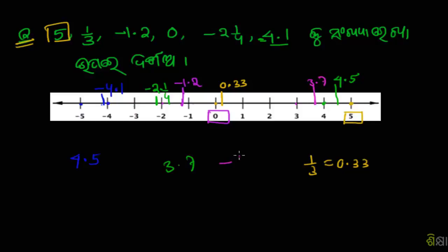We have minus 0.5. First, we have minus 0.5. How does it have? Between 0 or minus 1, we have minus 0.5.